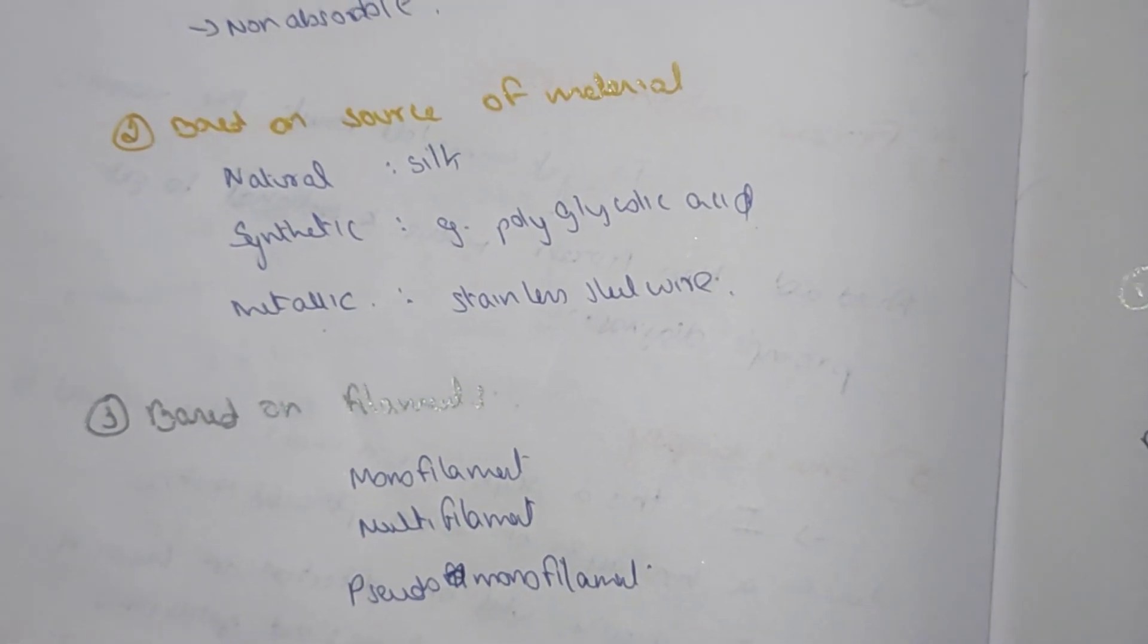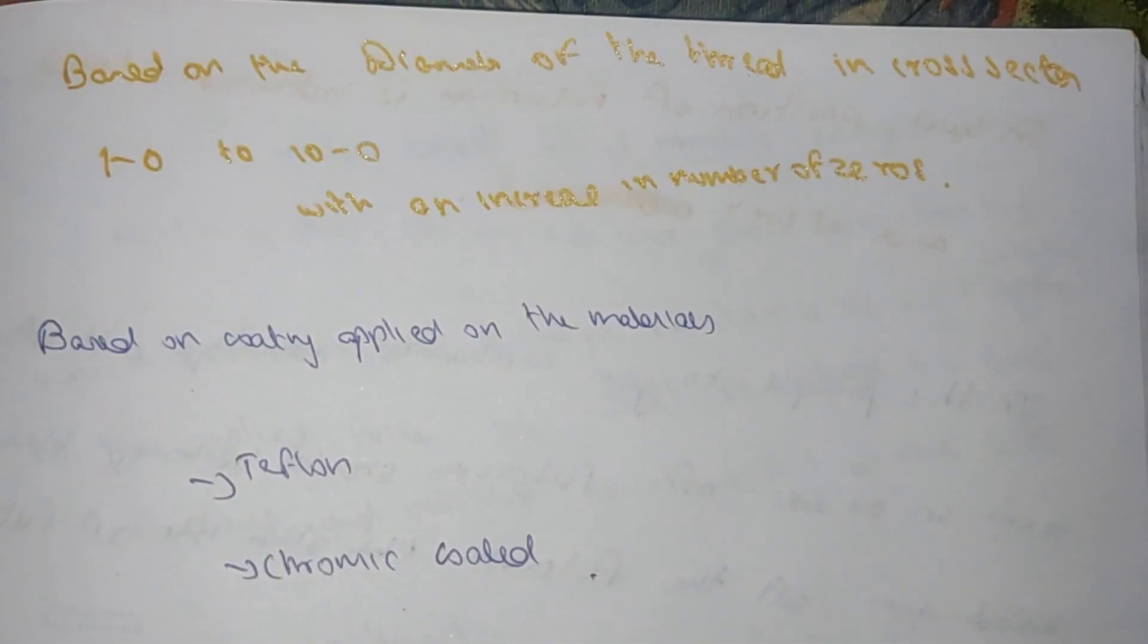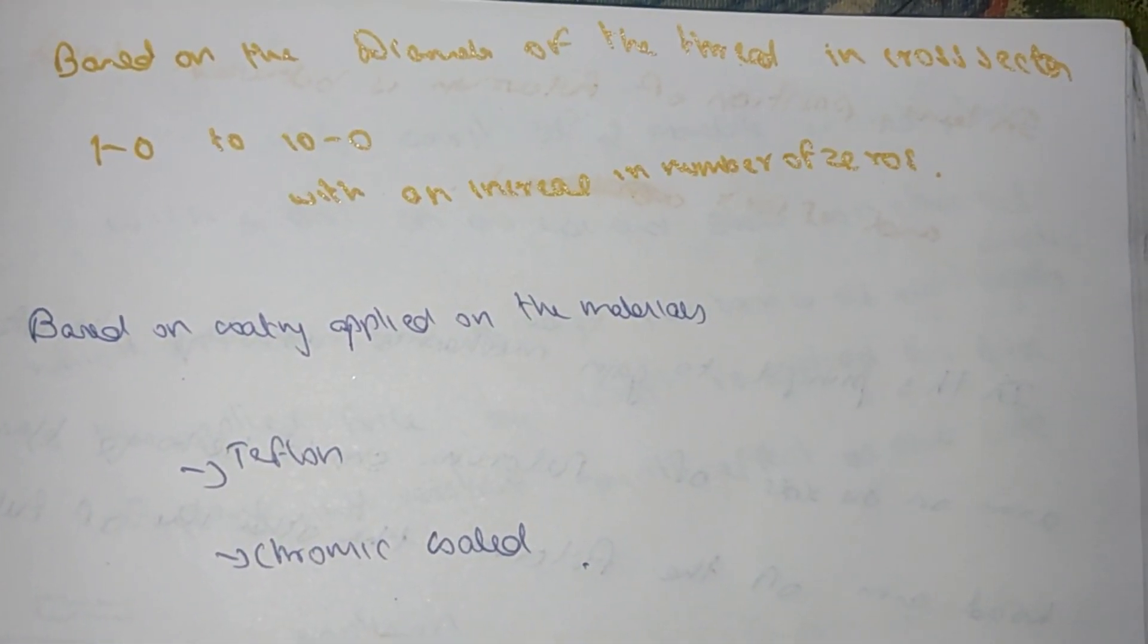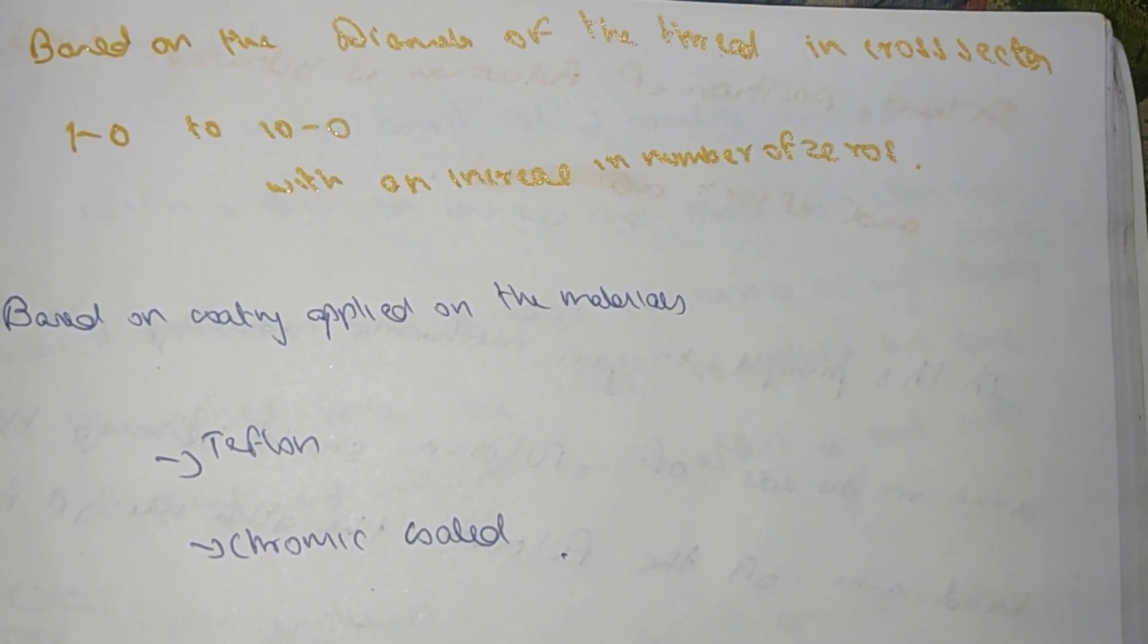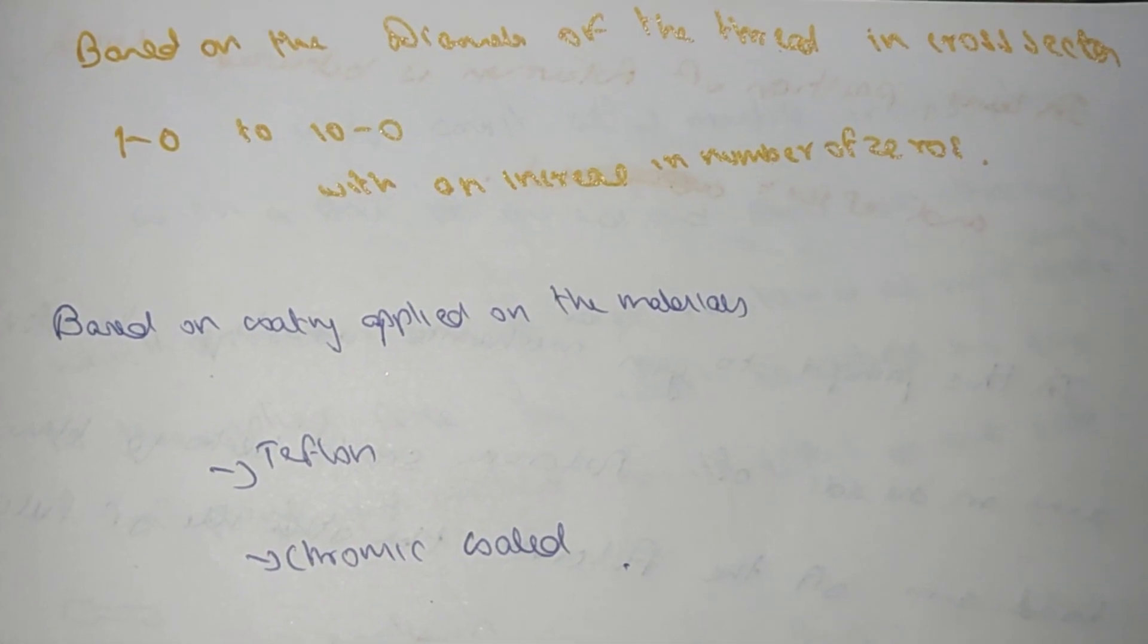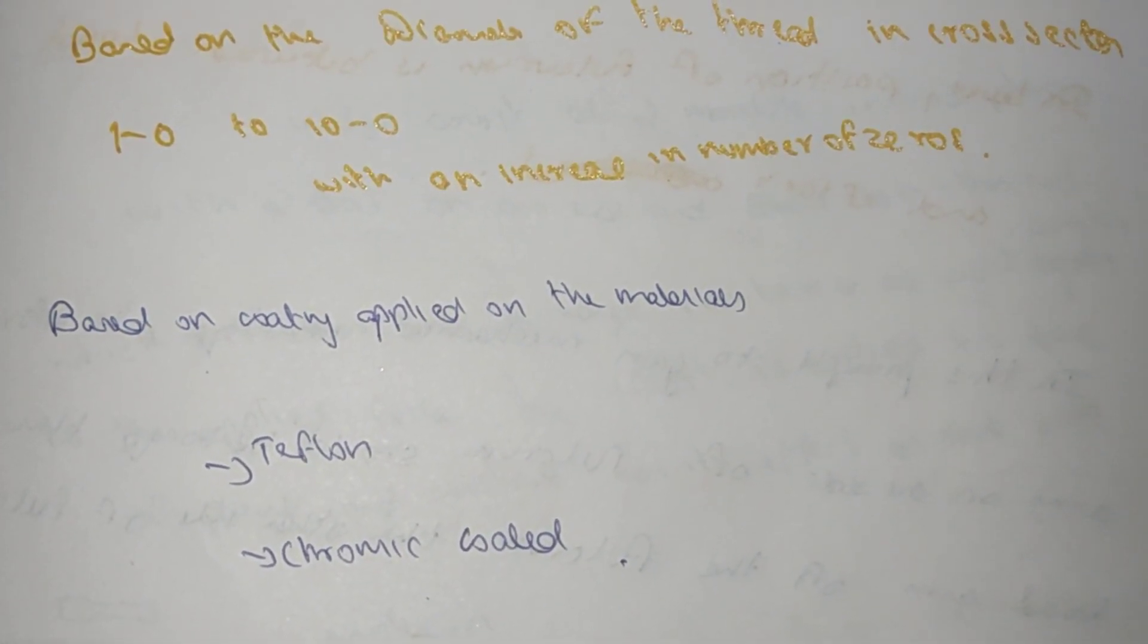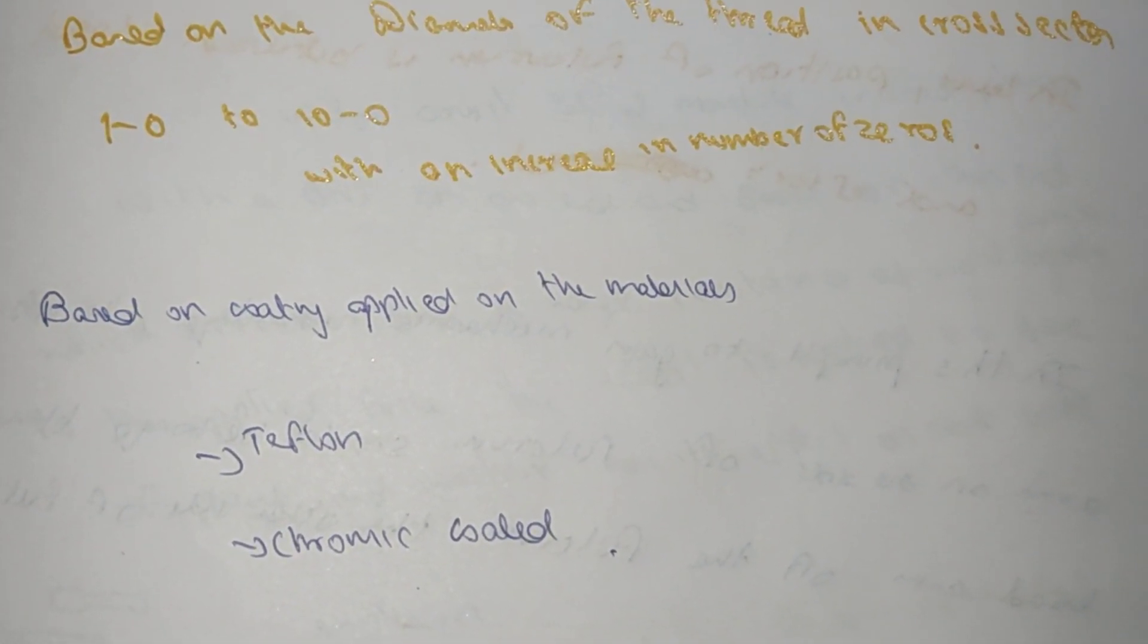Based on the cross section, it can be one to zero and ten to zero, which increases in number of zeros. Based on the coating applied on the materials, it can be Teflon and chromic coated.